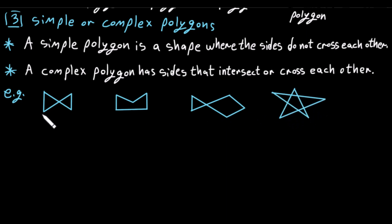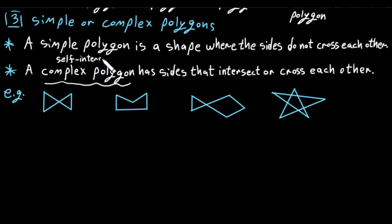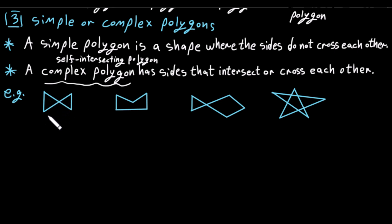Here are many examples of both types. A complex polygon is also called a self-intersecting polygon. You can see that this shape is self-intersecting because some of its sides cross each other — this side and this side cross — so this is a complex polygon.